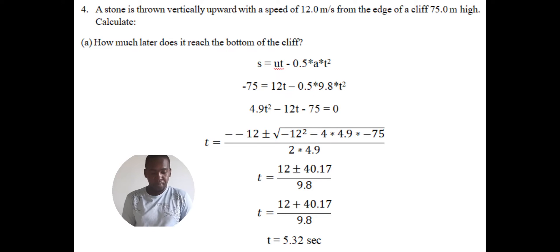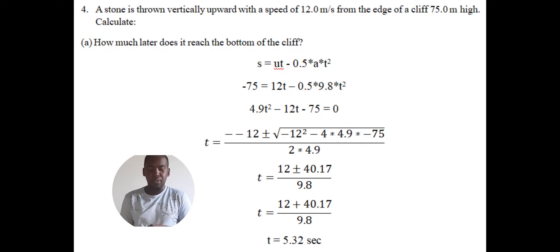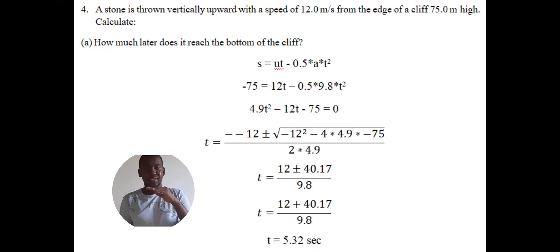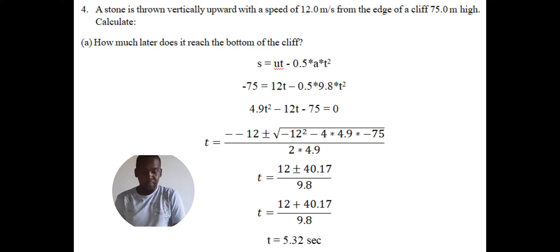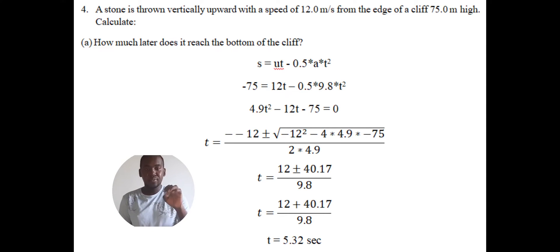Question four: a stone is thrown vertically up with a speed of 12 meters per second from the edge of a cliff which is 75 meters high. Calculate how much later it reaches the bottom. This is more technical because it needs to go up and then down to the bottom of the cliff. We use s equals ut plus half at squared. The displacement s is negative 75 because it ends up going down.